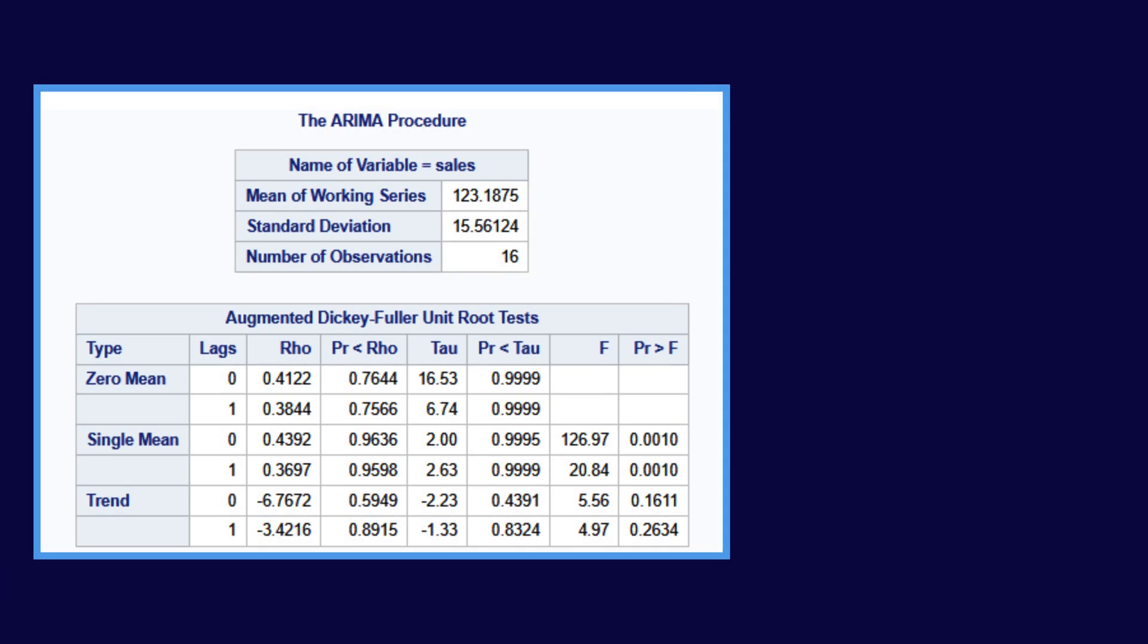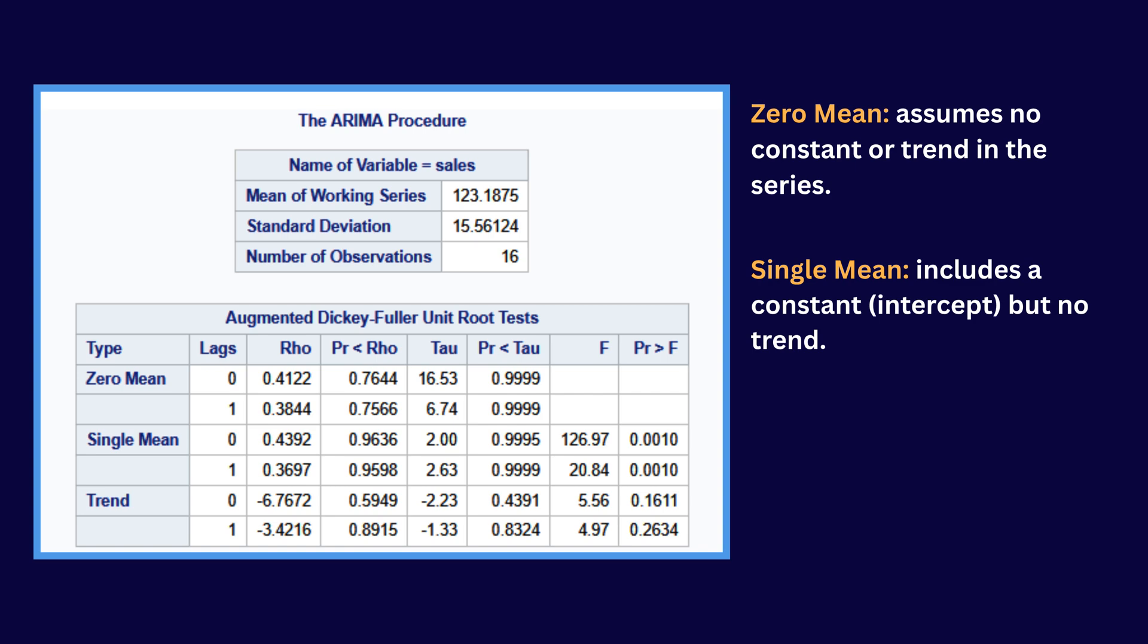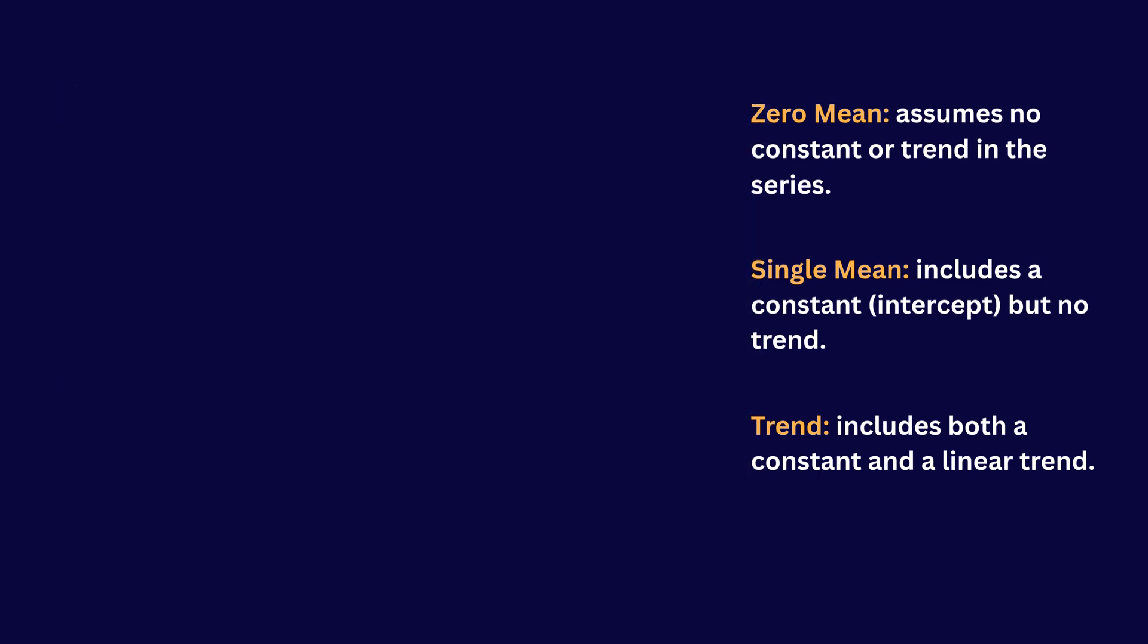The Augmented Dickey-Fuller test results are presented for three models. Zero mean assumes no constant or trend in the series. Single mean includes a constant intercept but no trend. Trend includes both a constant and a linear trend.